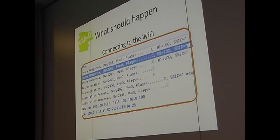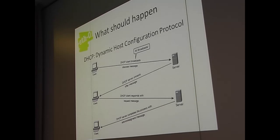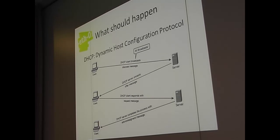That's the first step. After that, you need an IP address. When you connect to the Wi-Fi, your laptop doesn't have an IP address, which is necessary to communicate with a remote web server. The basic mechanism for that is DHCP — Dynamic Host Configuration Protocol. You send out a broadcast to all hosts in the local network, destination MAC address all Fs broadcast, asking: who here hands out IP addresses?